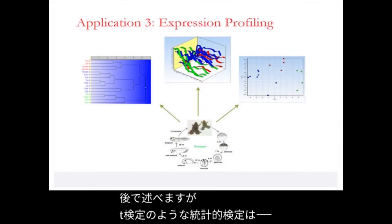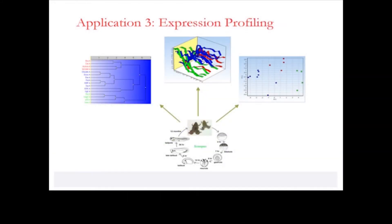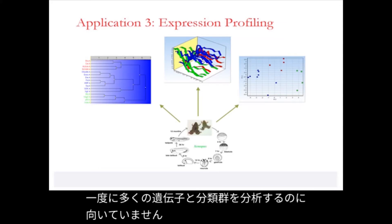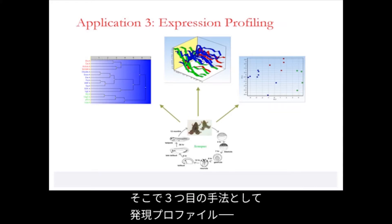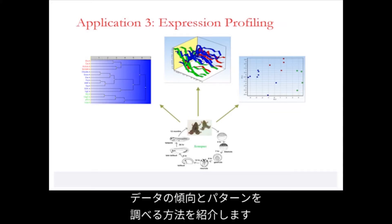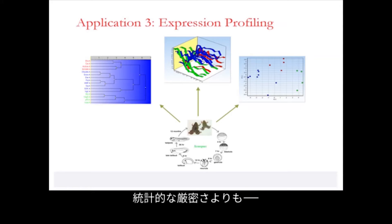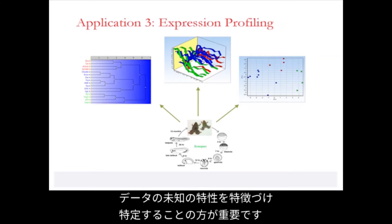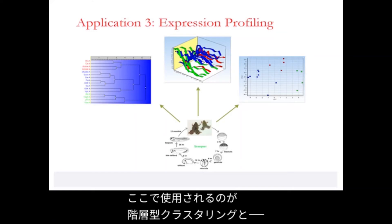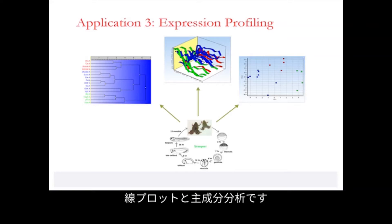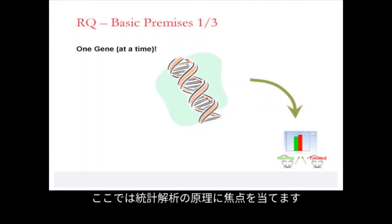Statistical tests perform poorly if we are analyzing many genes and samples and many classification groups at the same time. This leads us to the third application, which is expression profiling. In this application we explore the data for trends and patterns. Statistical rigor is less important; it is more important to characterize and identify previously unknown properties of the data. Methods used include hierarchical clustering, regular line plots, and principal component analysis.